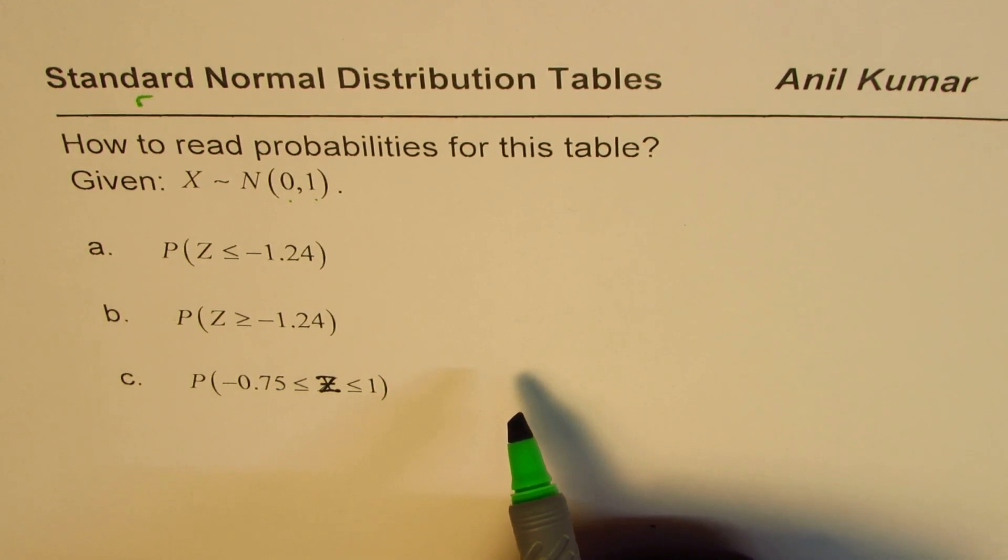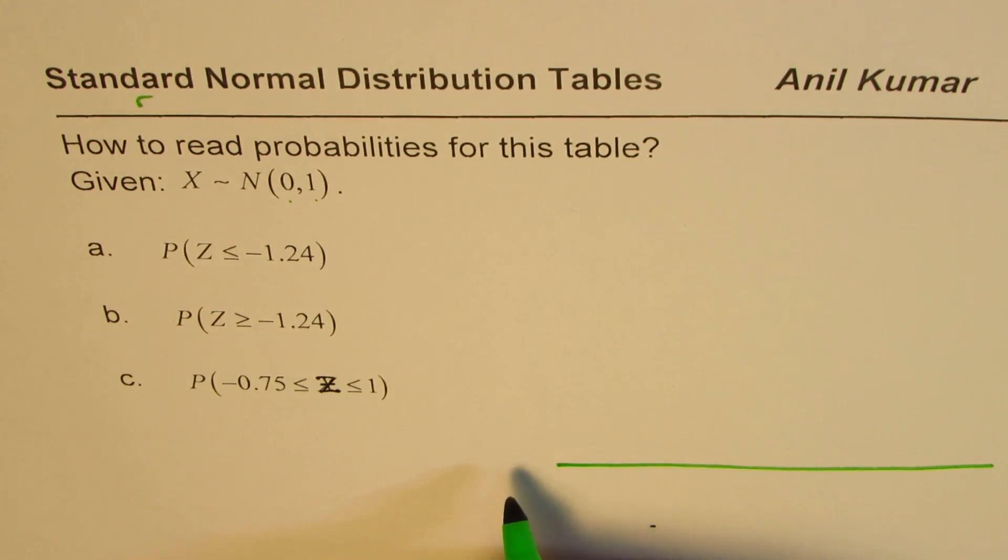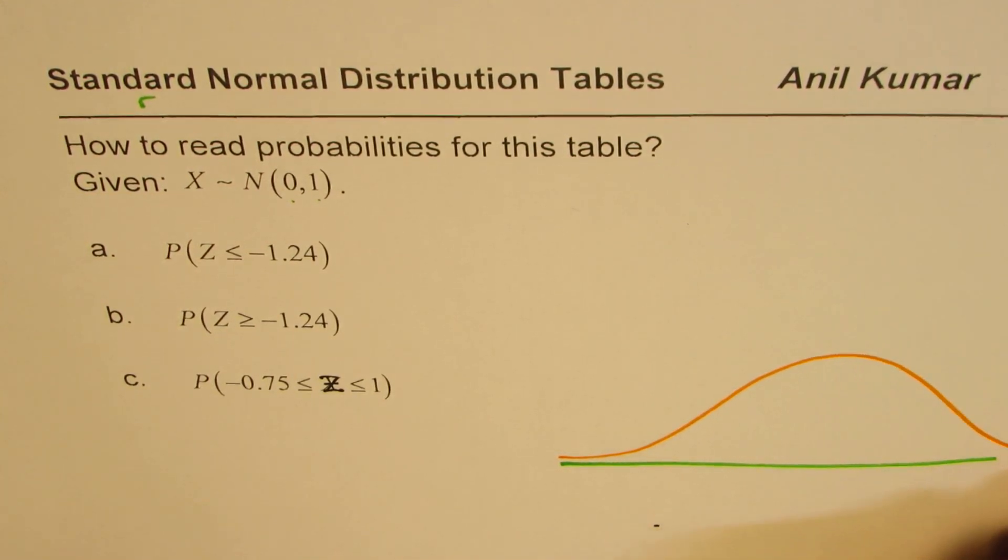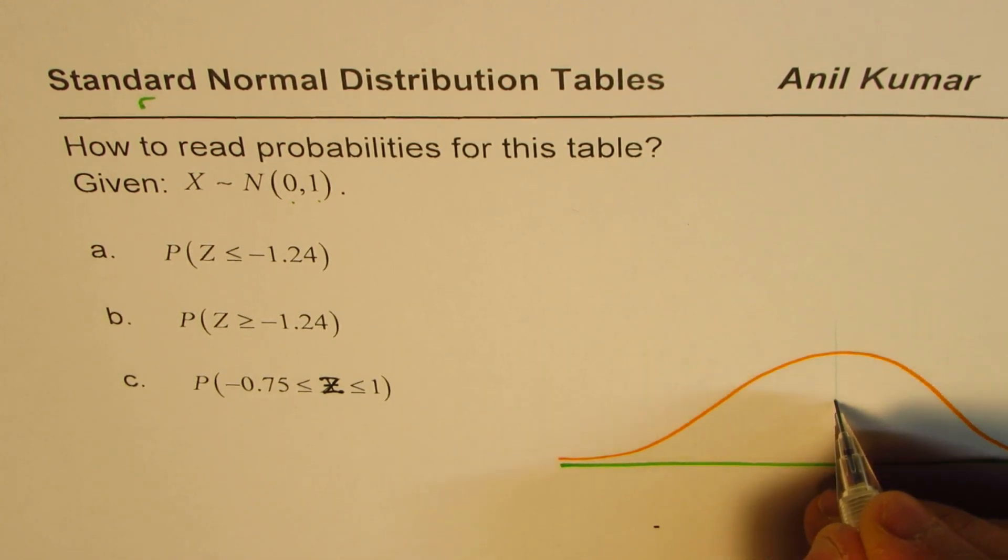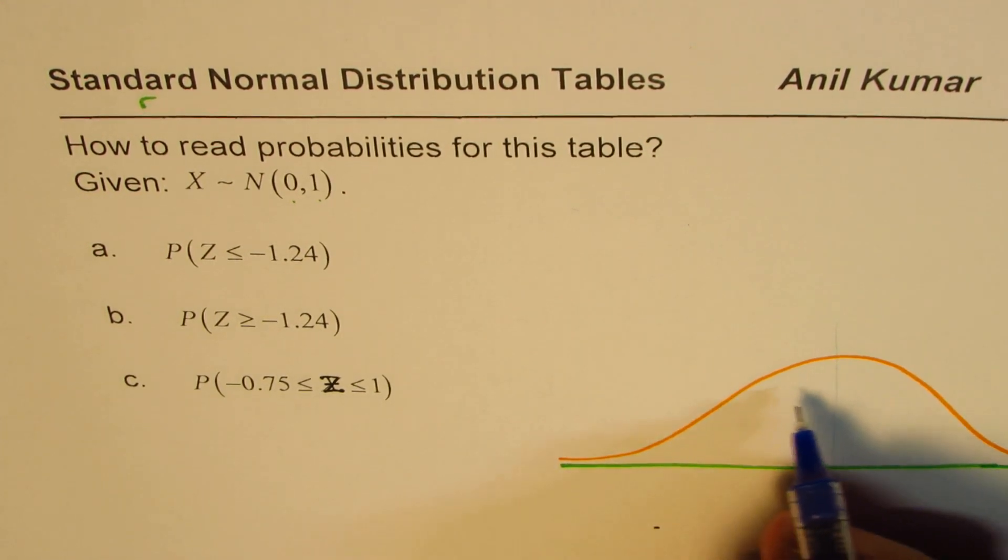We are going to use the tables. There are many types of tables. The one which we'll use will have values from the left side. So let me just sketch a normal graph here. This has to be asymptotic to horizontal. They never intersect. And the mean is right at the center. So we have mean and median at the same point, and 50% probability on each side. So that's the symmetry which we have.